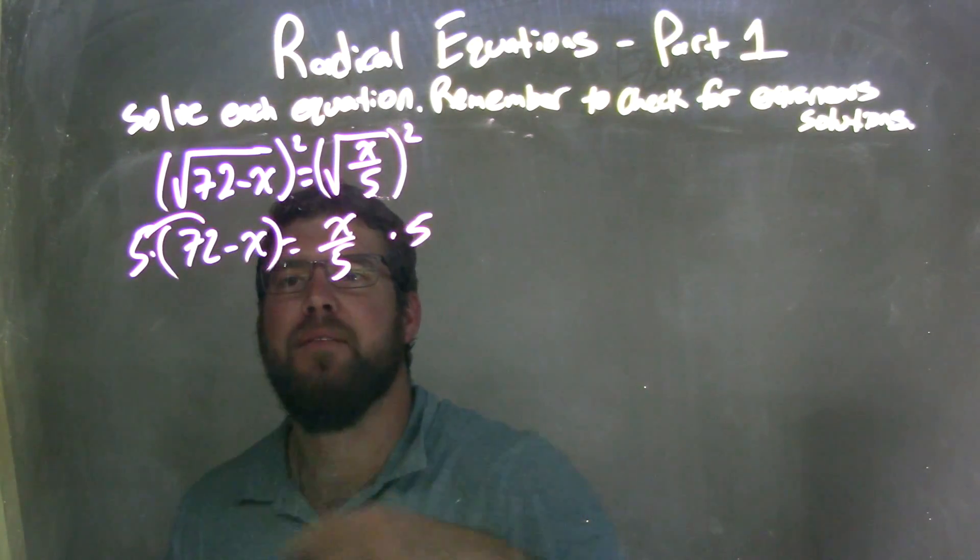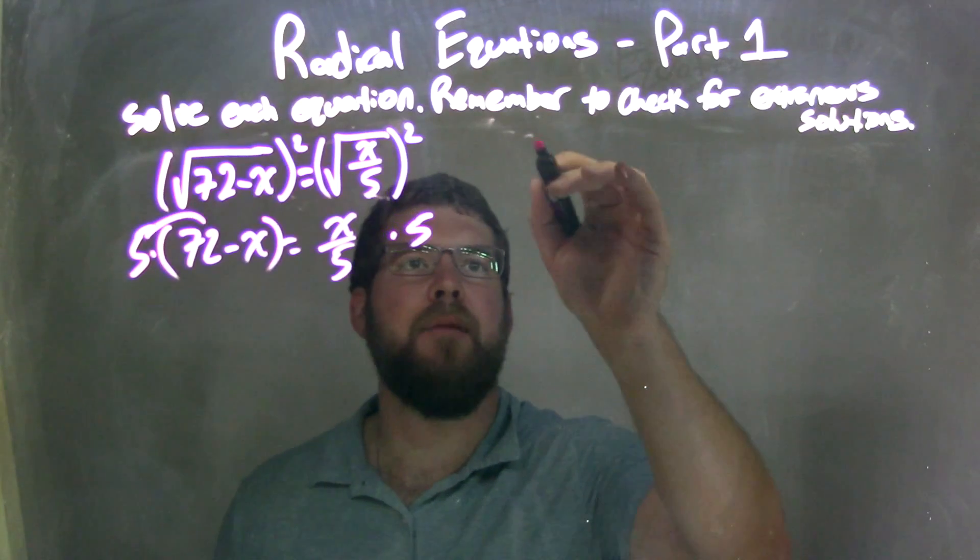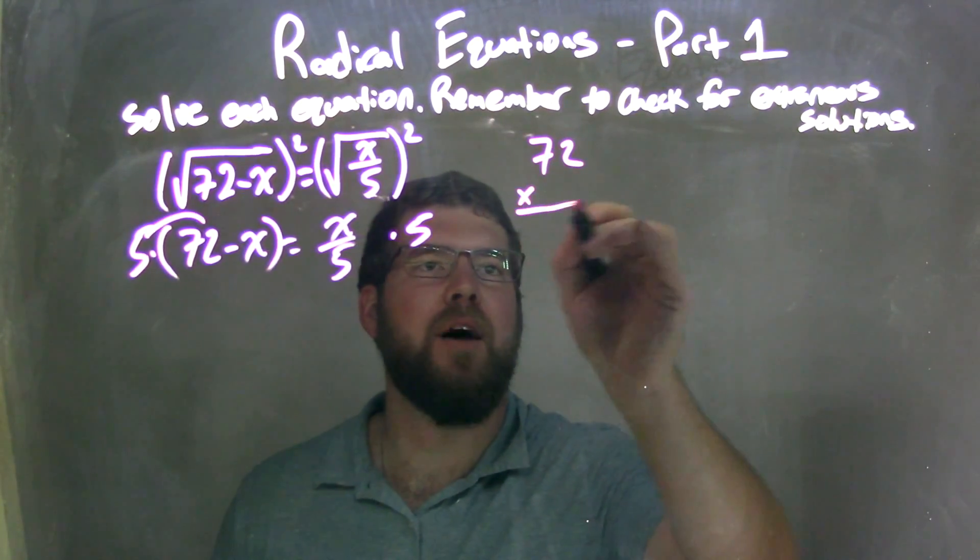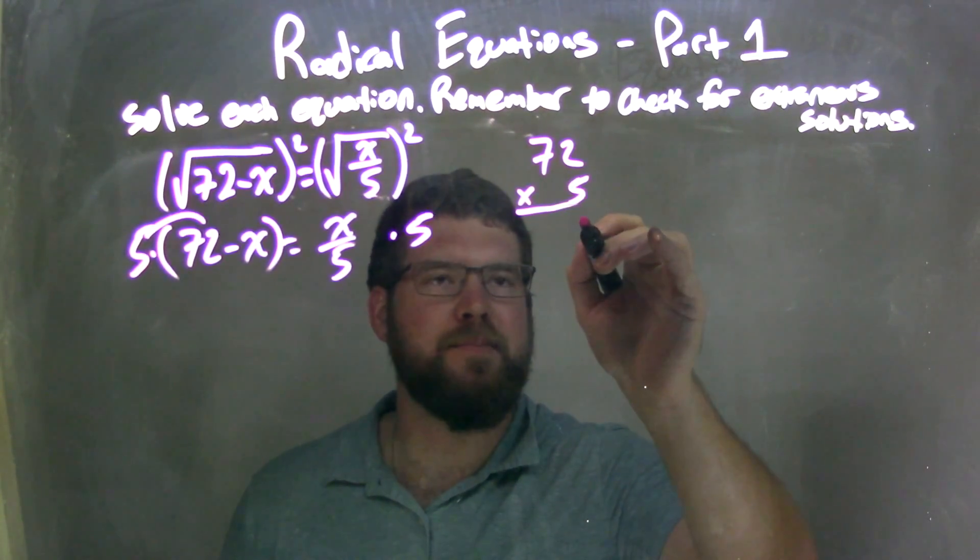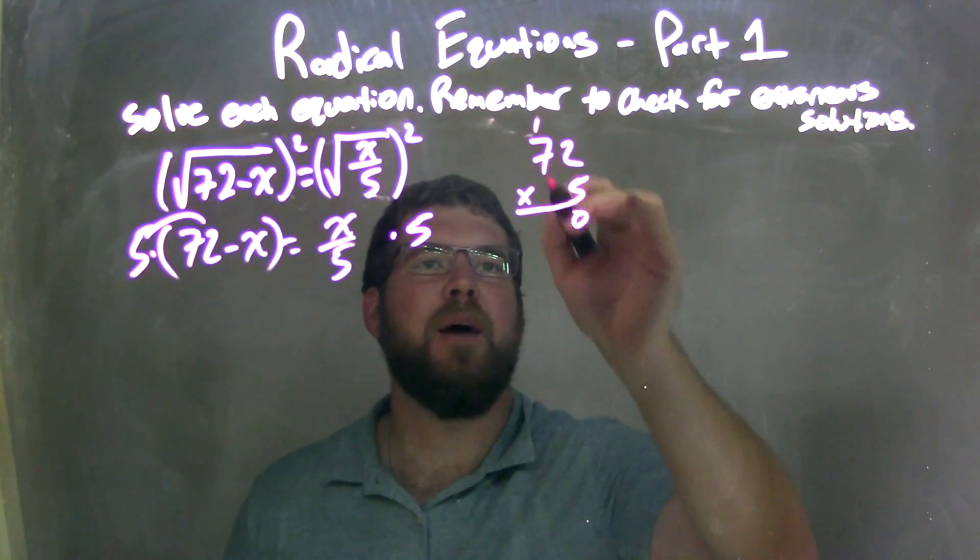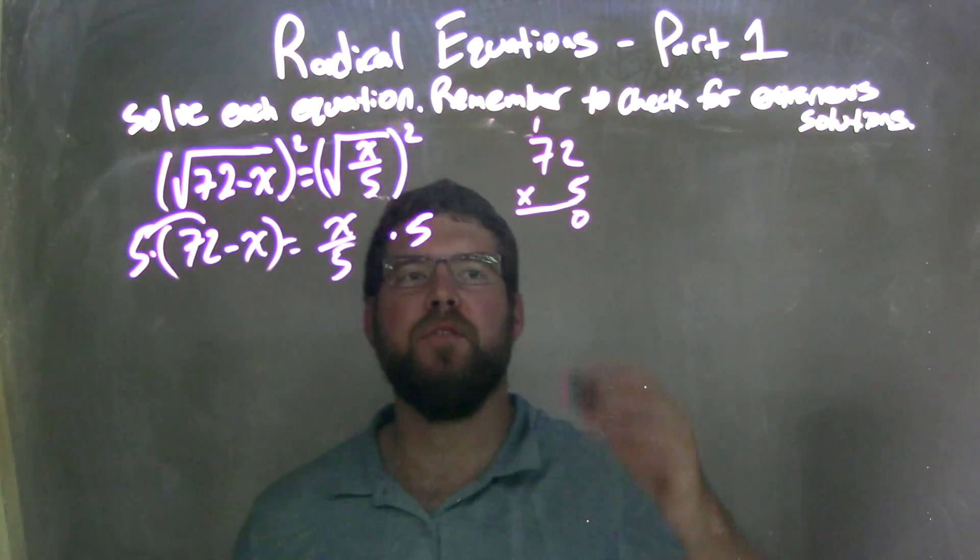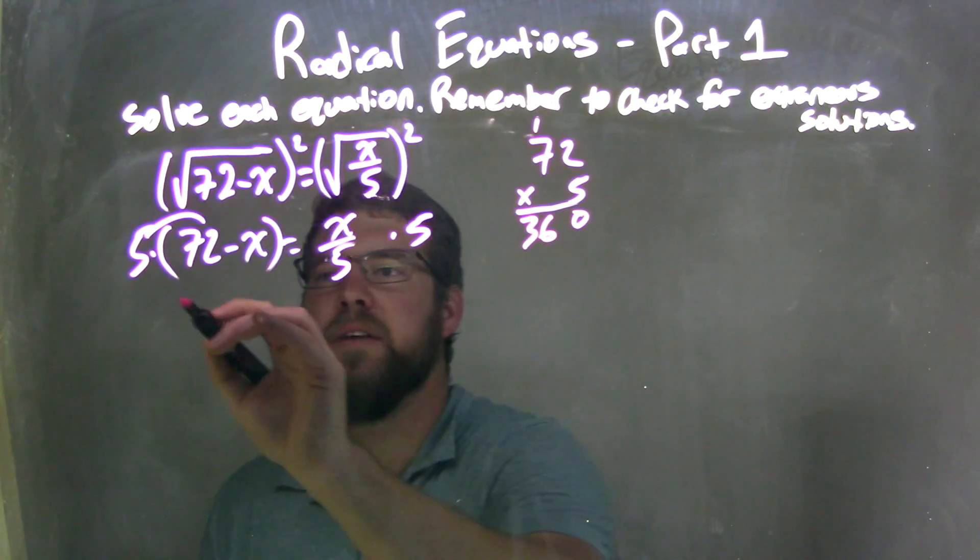Let's distribute. 5 times 72. Don't know off the top of my head. So 72 times 5. 2 times 5 is 10. 0 carry the 1. 5 times 7 is 35. Plus 1 is 36. So we have 360 here.